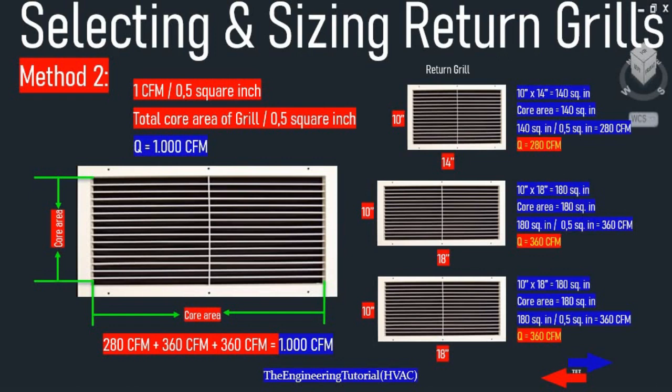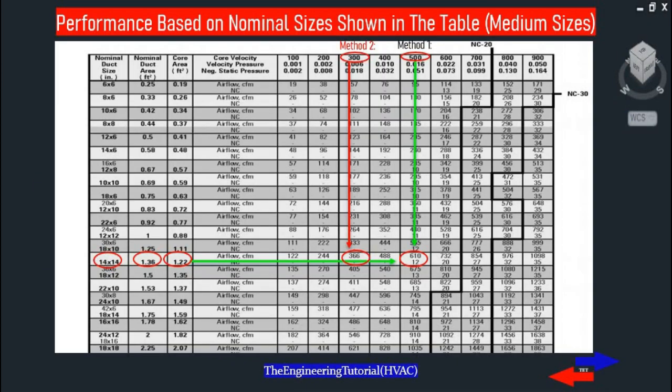For 1,000 CFM, we need two return grills of 10 by 18 inches and one of 10 by 14 inches. Comparing one of the grills determined with the second method to the first method shows that the first method gives lower face velocity, lower velocity pressure, lower negative static pressure, and lower noise criteria for a return core area of 10 by 18 inches.